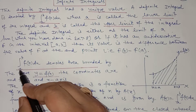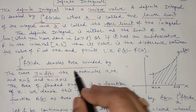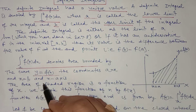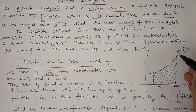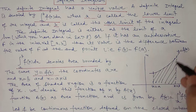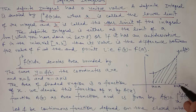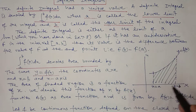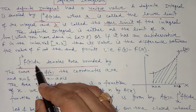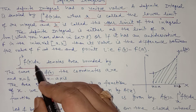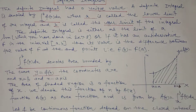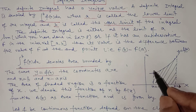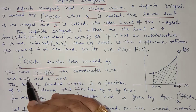The definite integral from a to b of f(x) with respect to x denotes the area bounded by the curve y = f(x), the coordinates x = a and x = b, and the x-axis. This definite integral denotes the area bounded by the curve between these two limits and the x-axis when integrating with respect to x. When integrating with respect to y, the area is bounded by the curve between the two limits along the y-axis.